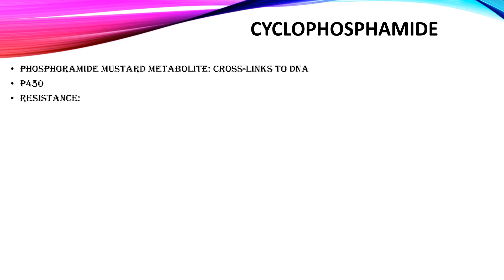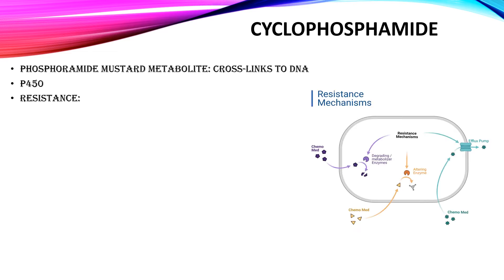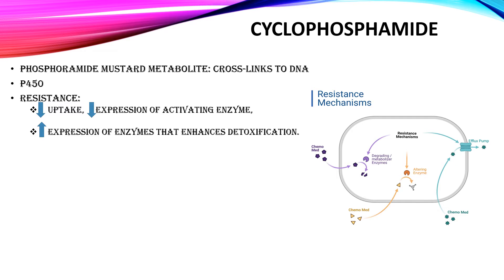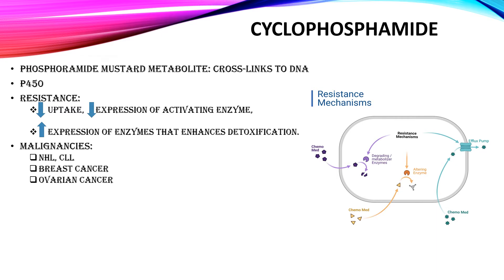Cancer cells may establish resistance to cyclophosphamide via different mechanisms. One of these mechanisms is decreasing cyclophosphamide uptake. Another mechanism is decreasing the expression of its activating enzyme, which I mentioned previously. Another mechanism is increasing the expression of an enzyme that results in enhanced metabolization and detoxification of cyclophosphamide. Besides non-Hodgkin lymphoma, cyclophosphamide is also used in other cancers including chronic lymphocytic leukemia, breast cancer, ovarian cancer, and bone and soft tissue sarcoma.